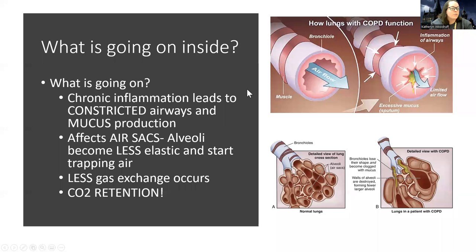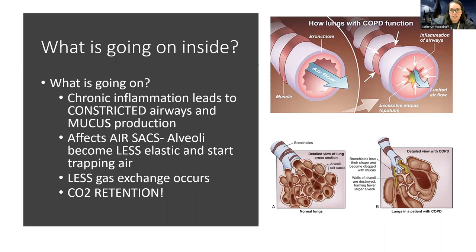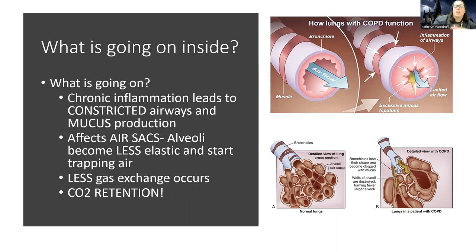With asthma, the problem is all in the airways — the bronchioles. There are smooth muscle rings around the outside of the airway that constrict, and there's also mucus inside. COPD has that too, but the difference is the problem in COPD goes all the way into the air sacs. With asthma there's no alveolar involvement, but in COPD the alveoli become less elastic and start to break down.